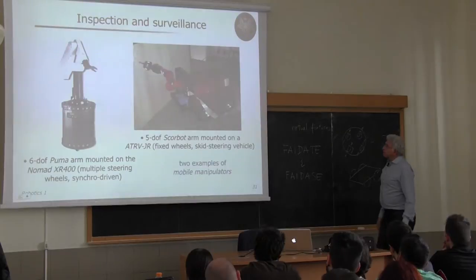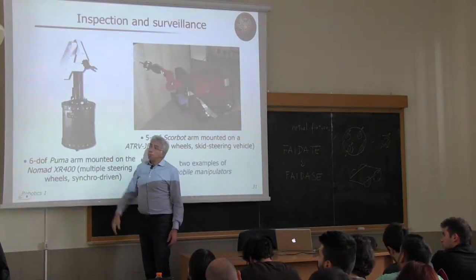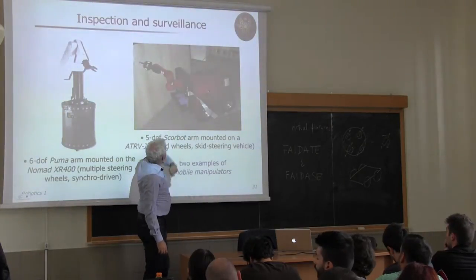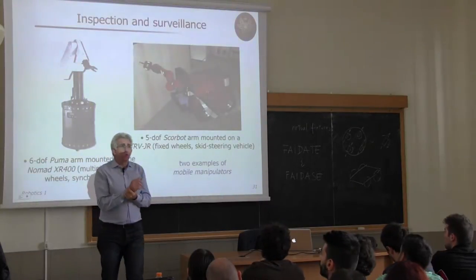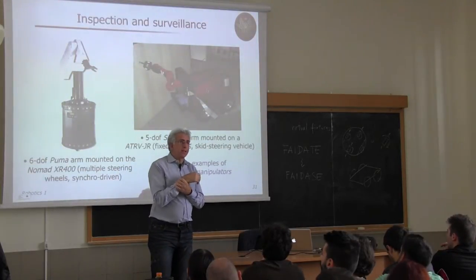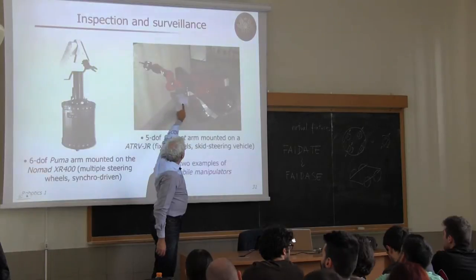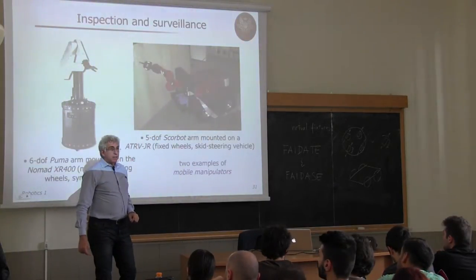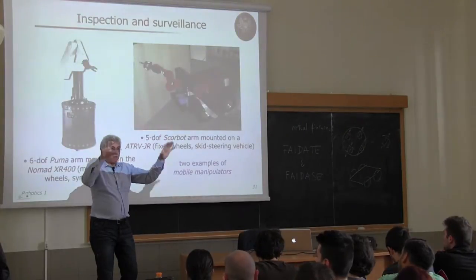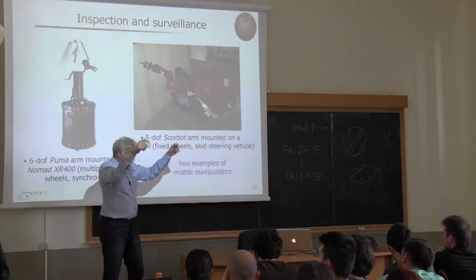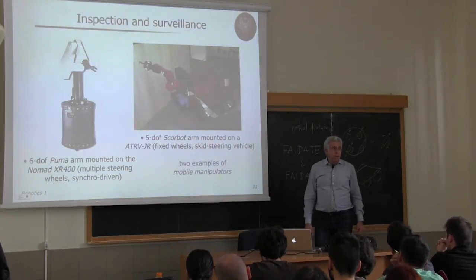On top of mobile bases, different manipulators can be mounted. On the left is a six-degrees-of-freedom all-revolute PUMA arm, and another carries a five-degrees-of-freedom SCORBOT arm mounted at the front together with a laser scanner. Both systems are intended to move around, and when in front of a target, perform manual operations like rotating valves or checking electrical devices.